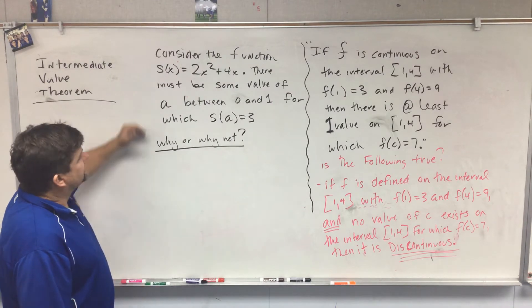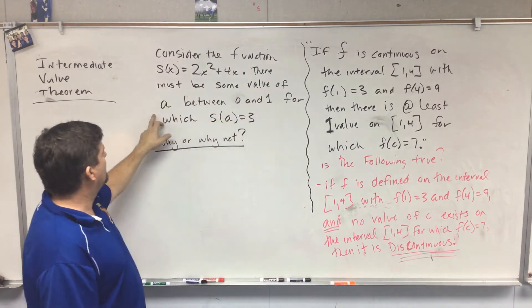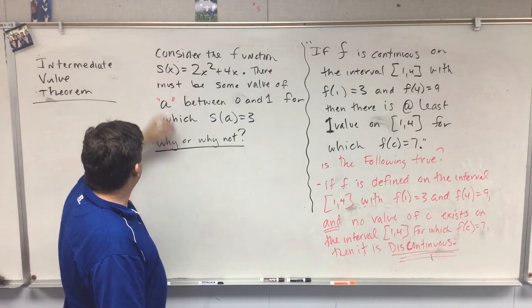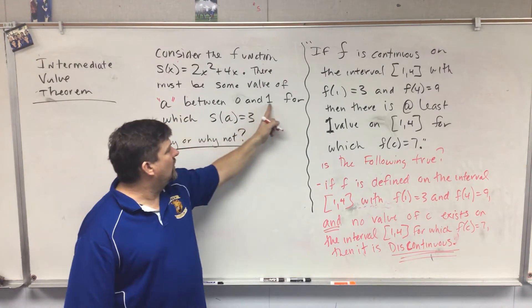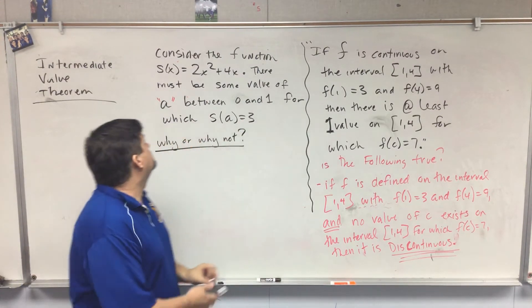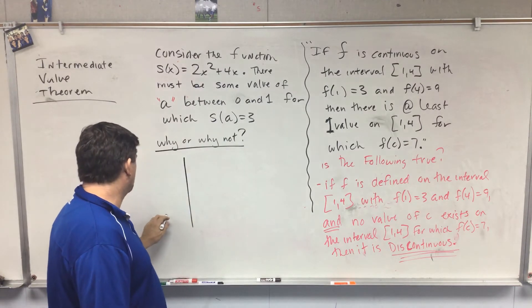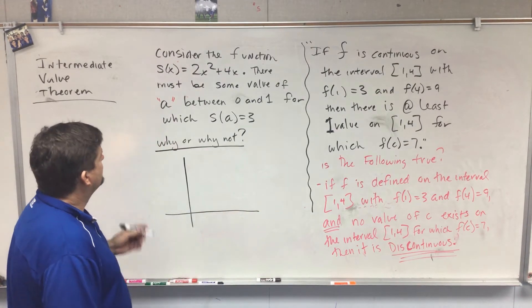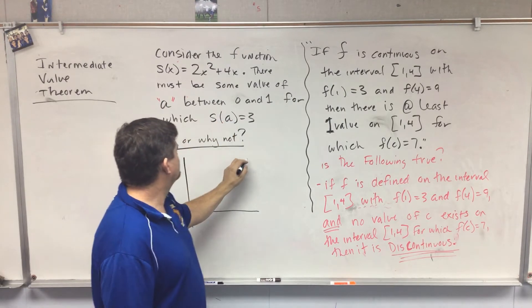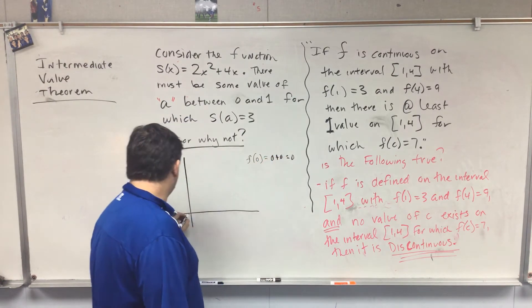Let's consider the function s(x) equals 2x² plus 4x. There must be some value of a, like a variable a, of the value a between 0 and 1 for which s(a) equals 3. So why or why not?